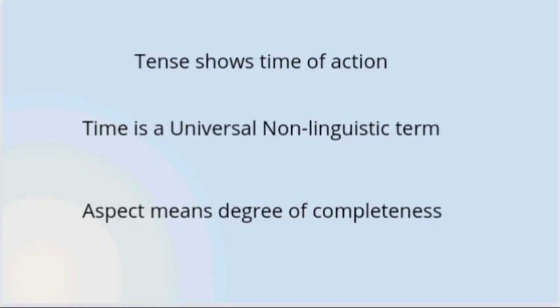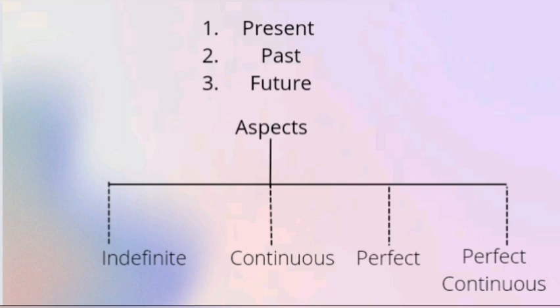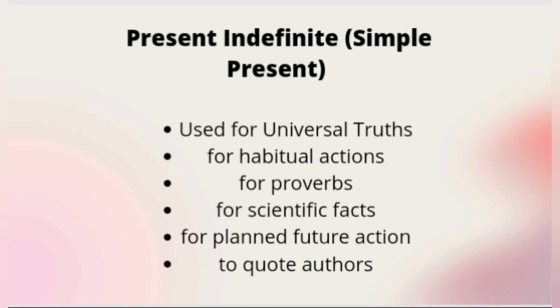Tense shows the time of action, and time is a universal non-linguistic term. By aspect we mean the degree of completeness of an action — whether the action is habitual, progressive, or complete. There are three tenses: present, past, and future, and each of these has four different aspects: indefinite, continuous, perfect, and perfect continuous — so in total we have 12 tenses.